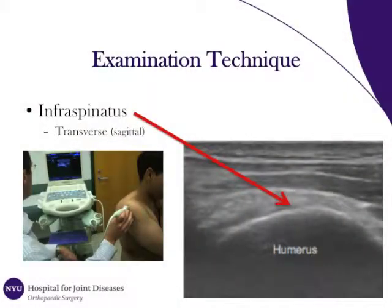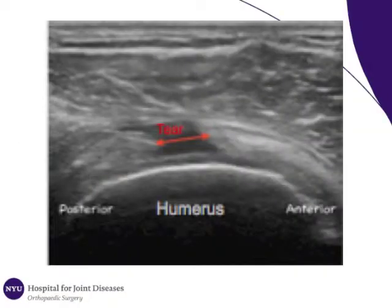The infraspinatus is then imaged in the transverse plane. This is done with a slight rotation of the patient on the swivel stool and a 90-degree orientation of the probe. The infraspinatus is demarcated by the red arrow. A tear would be recognized as a dark or hypoechoic region within the tendon substance. Both partial and full thickness tears can be detected.